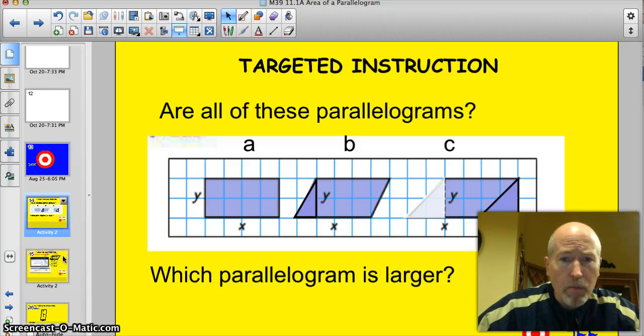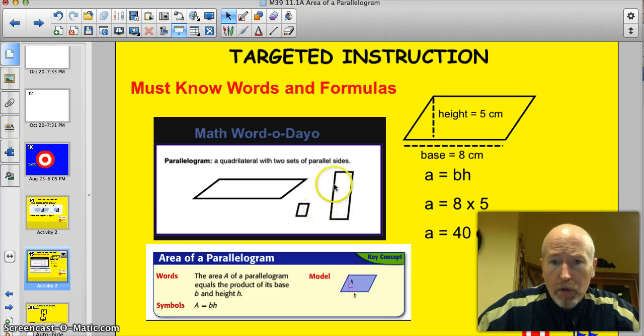All right, here we go. Let's get some words and formulas. Officially, a quadrilateral with two sets of parallel sides. All of these are quadrilaterals, and they're all parallelograms because they all have two sets of parallel sides. It kind of looks goofy, but they do.